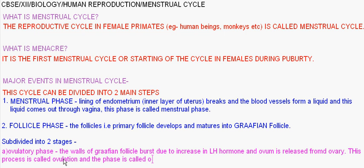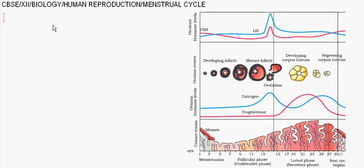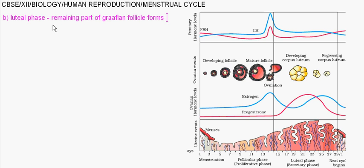The next phase is the luteal phase. In this phase, the remaining part of the Graafian follicle forms the corpus luteum. Now we will discuss the hormones involved in this cycle.